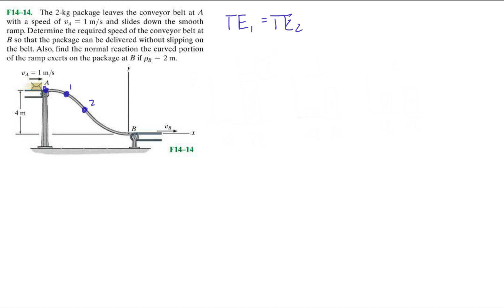Also find the normal reaction when the curved portion of the ramp exerts on the package at B. If rho B, meaning the radius of curvature at B, is 2 meters.